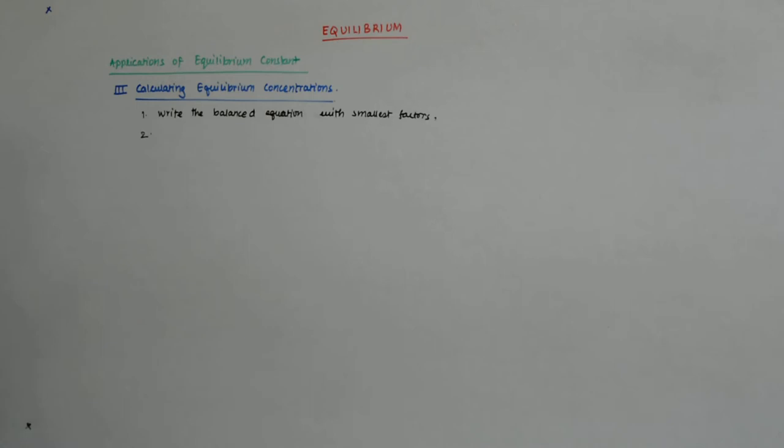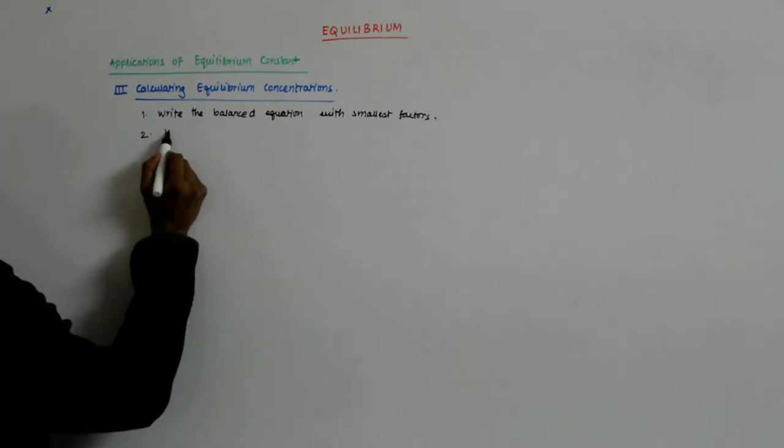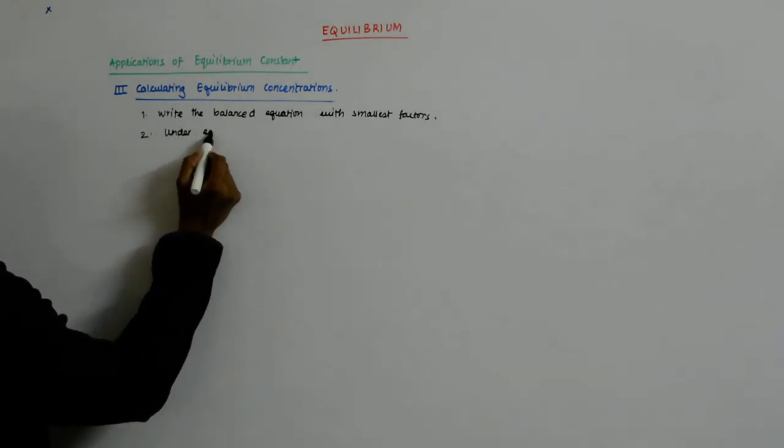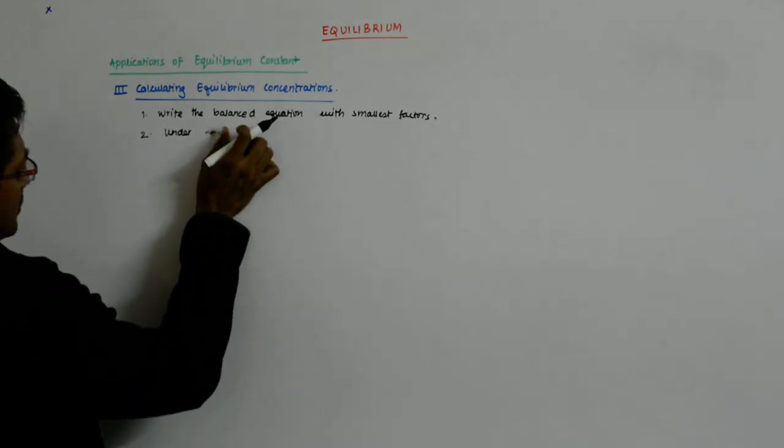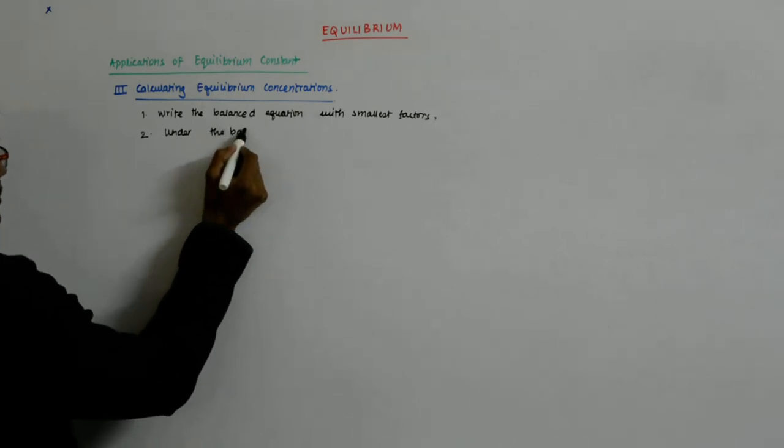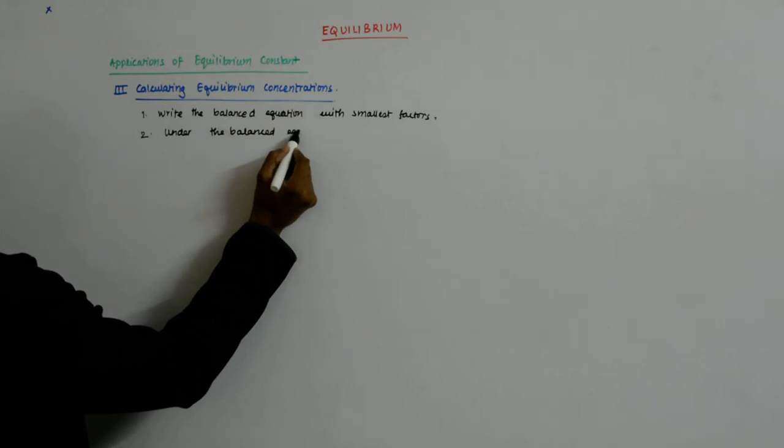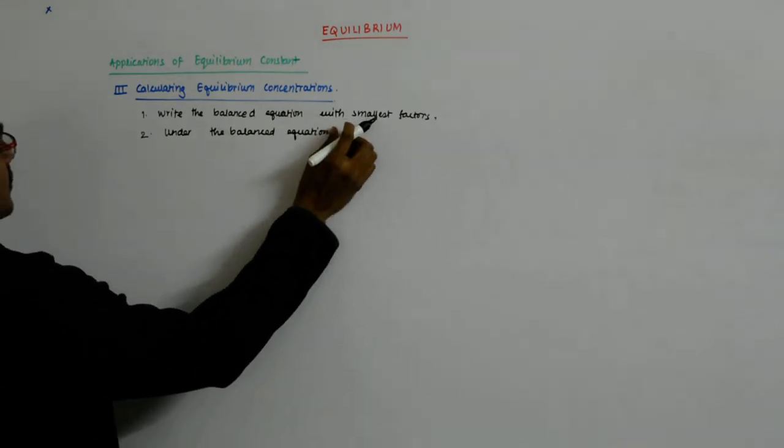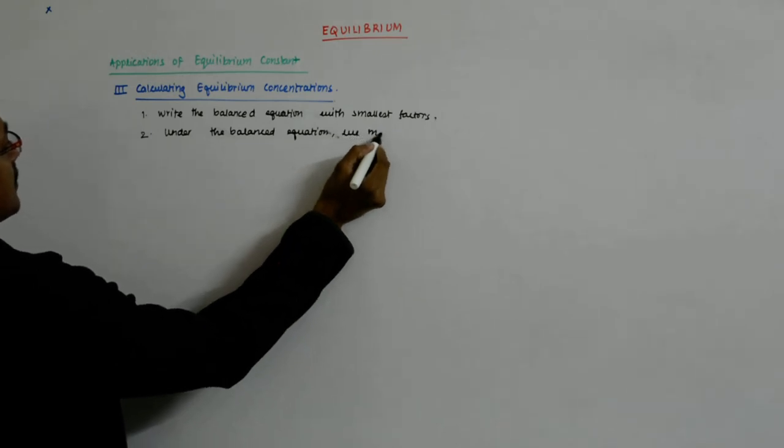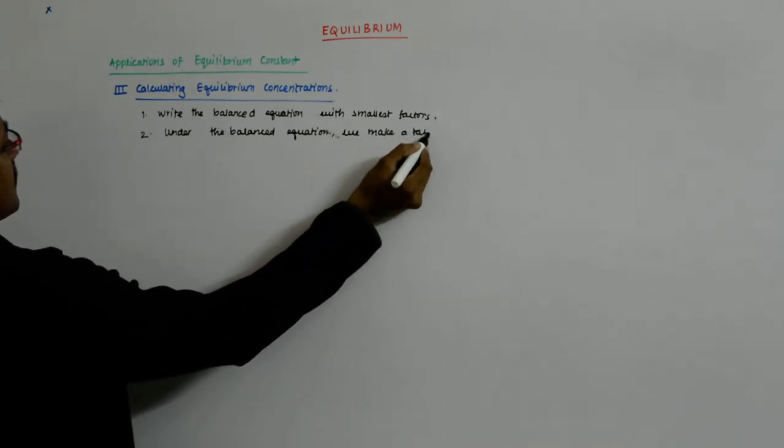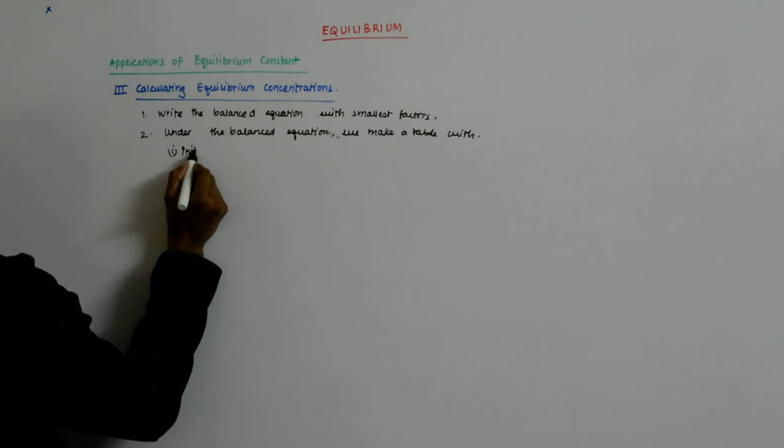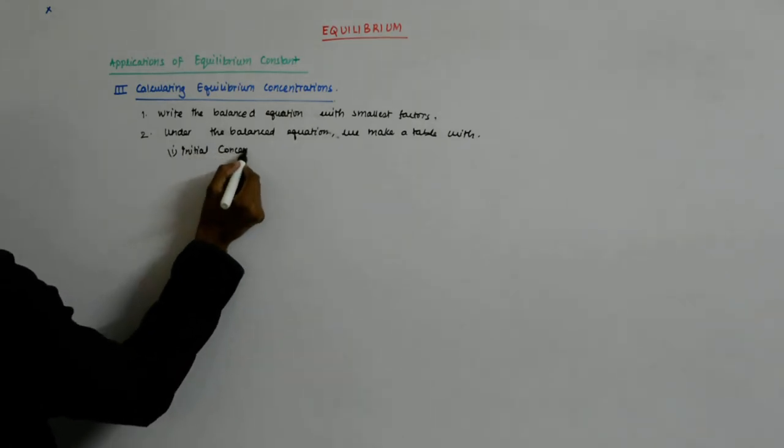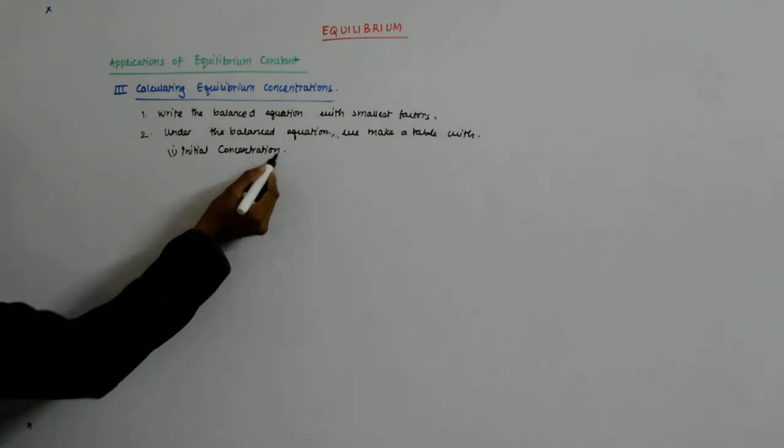The second thing is that you assign those values. Under equilibrium, make a table. Under the balanced equation, we make a table with the first thing being the initial concentrations. That would be mostly given to you.